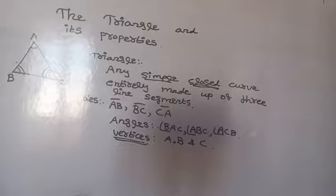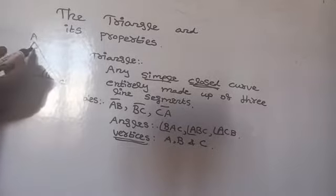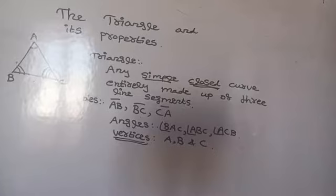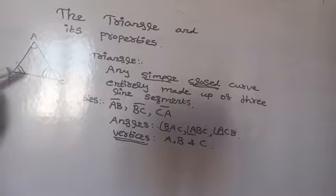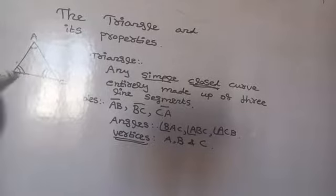The side opposite to vertex A is BC. Then, what is the angle opposite to side AC? Side AC is here, so the angle opposite to side AC is angle B.